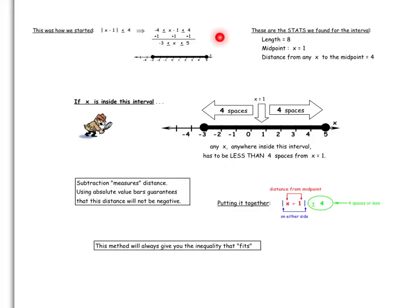In the interest of making it easier for you, I rewrote here the original inequality that we started with, and the stats we had so far. The length of the segment, 5 minus minus 3 is 8. The midpoint, 5 plus negative 3 divided by 2, the average is 1. And so from 1, half of the interval is 4 spaces long, and the other half of the interval is 4 spaces long.